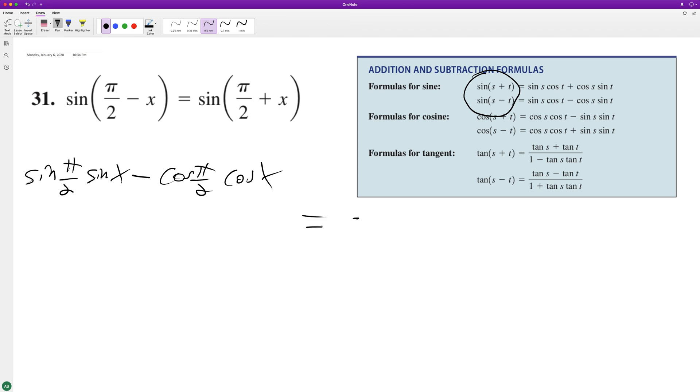right side it's going to be sine of pi over 2 sine of x plus cosine of pi over 2 cosine of x. So this is equal to 1 times sine of x minus